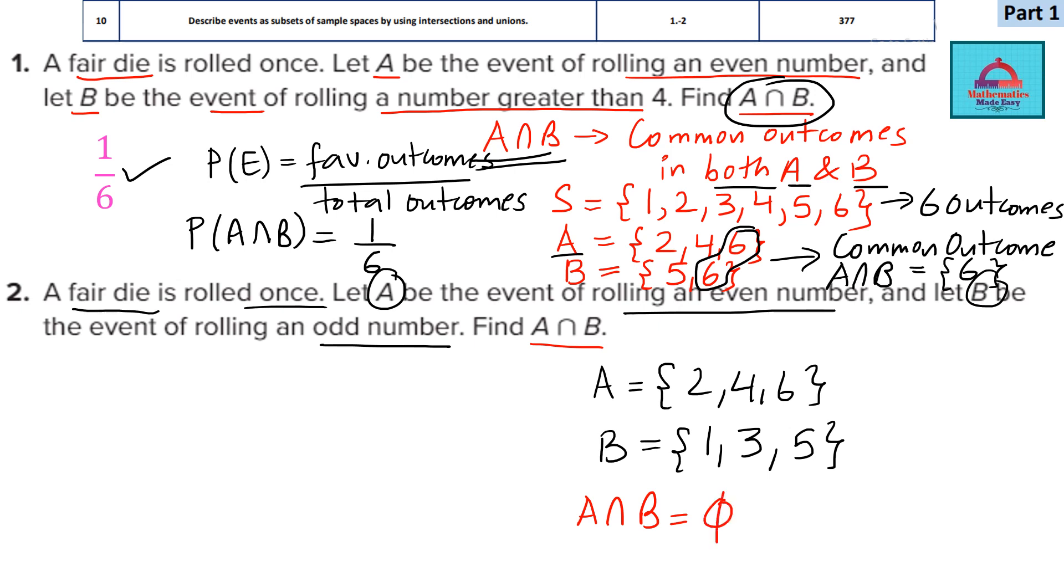It is going to be the empty set. Because it does not have any common outcome, A intersection B is going to be the empty set. If you want to find the probability, since there is no common outcome, it will be 0 over 6 which is 0. So the final answer here is 0. This is the probability for A intersection B for question 2.